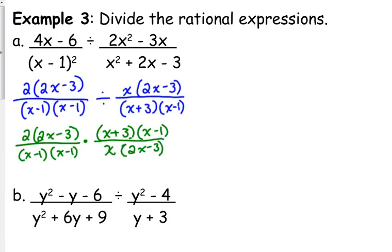And now we can cancel. 2x minus 3 is in the numerator and the denominator. There is one x minus 1 in both the numerator and the denominator. There's still one left in the denominator. So when we collect what we've got left, we've got a 2 times x plus 3 in the numerator. We have an x times x minus 1 in the denominator.